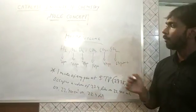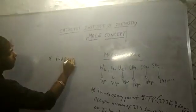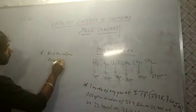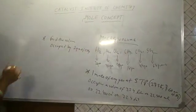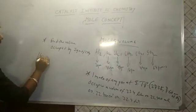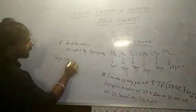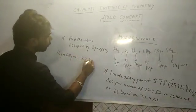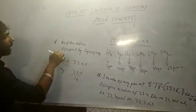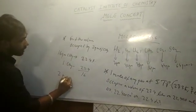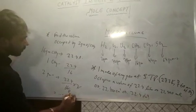For example, find the volume occupied by 2 grams of CH4 at STP. We know 16 grams of CH4 (its molecular weight) occupies 22.4 liters. So 1 gram CH4 occupies 22.4/16 liters, and 2 grams CH4 will occupy (22.4/16) × 2 liters.